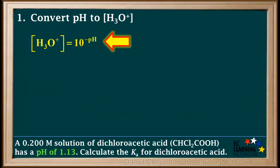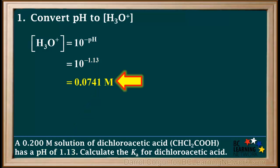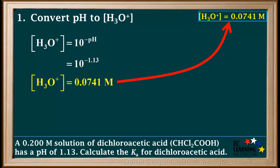We'll start by converting pH to hydronium ion concentration. We use the formula: the concentration of H3O+ equals 10 to the negative pH, or the antilog of negative pH, which is equal to 10 to the negative 1.13. That comes out to 0.0741 molar. Even though the pH had two significant figures, we'll use one extra significant figure for this value in our calculations, then round to two significant figures at the end of the problem. So the concentration of H3O+ is 0.0741 molar.